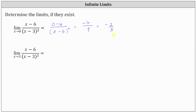Looking at our second limit, we have the limit of the same rational function now as x approaches three. We'll notice how the rational function is undefined at x equals three, because at x equals three we have division by zero. And therefore, we cannot find this limit by performing direct substitution.